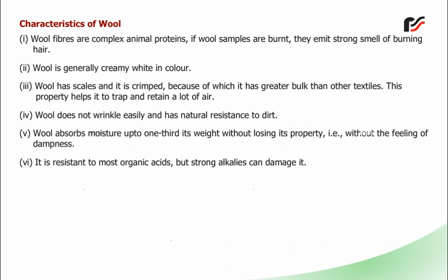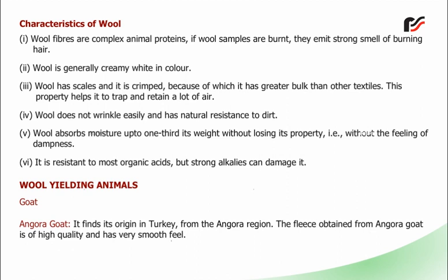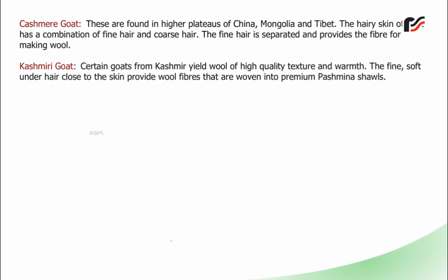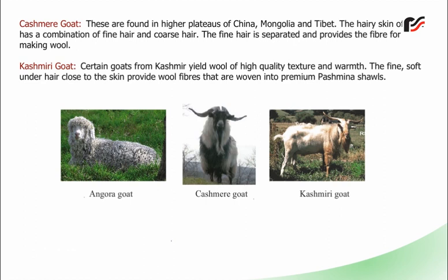The Angora goat finds its origin in Turkey from the Angora region. The fleece obtained from Angora goat is of high quality and has a very smooth feel. Kashmiri goats are found in higher plateaus of China, Mongolia and Tibet. The hairy skin of the goat has a combination of fine hair and coarse hair. The fine hair is separated and provides the fibre for making wool. Certain goats from Kashmir yield wool of high quality, texture and warmth. The fine, soft underhair close to the skin provides wool fibres that are woven into premium pashmina shawls.